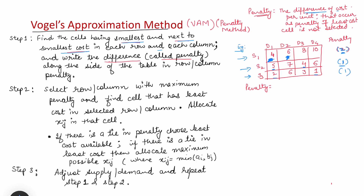In the third row, the least is 1 and the next least is 2, so the penalty is 1. For column-wise calculation: in the first column the least is 2 and the next least is 4, so the difference is 2. In the second column, the least cost of 6 occurs at two places, so the next least among remaining is also 6, giving a penalty of 0. In the third column the penalty is 1 (costs 3 and 4). In the last column, the least is 1 and next least is 6, giving a penalty of 5.